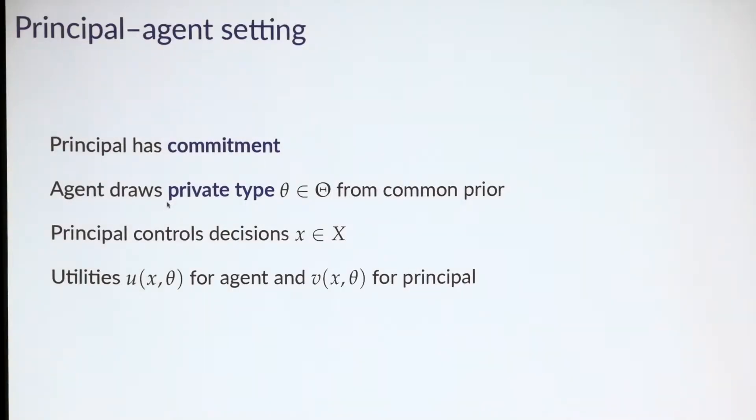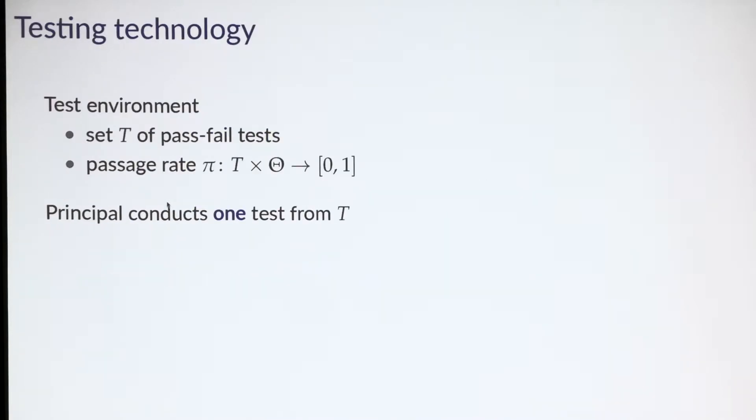We're going to present a model that explicitly references tests with probabilistic outcomes. I'll connect our model to recent literature in CS on probabilistic verification later. Let's jump into the model. We start with a standard principal-agent setting. The principal has commitment power. The agent draws a private type theta from some common distribution.